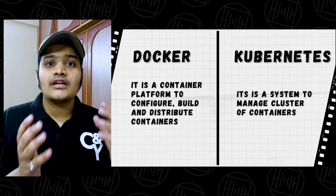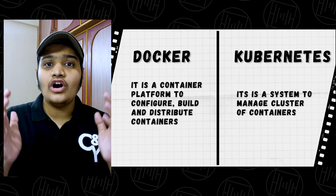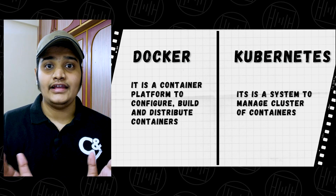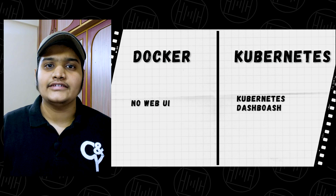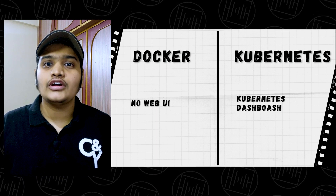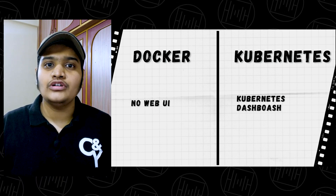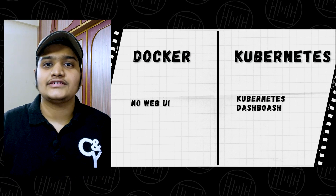Docker is a container platform for building, configuring, and managing your entire application in a single container. Kubernetes, on the other hand, is a system for managing the cluster of all containers. Docker has no web UI for monitoring containers, whereas Kubernetes comes with a default Kubernetes dashboard which has a web UI for monitoring clusters and containers.